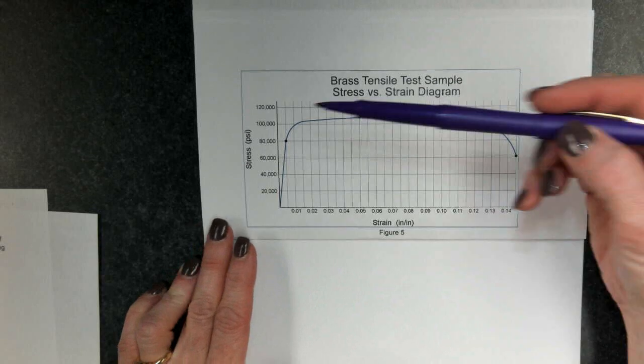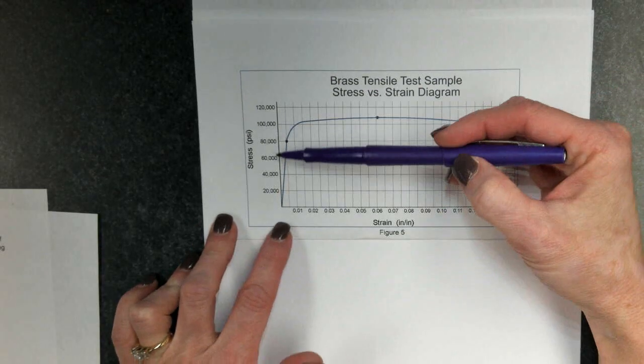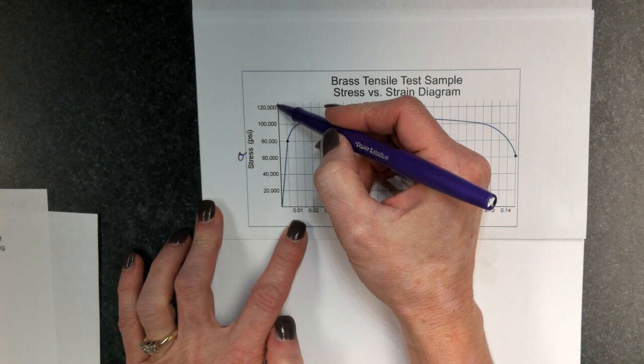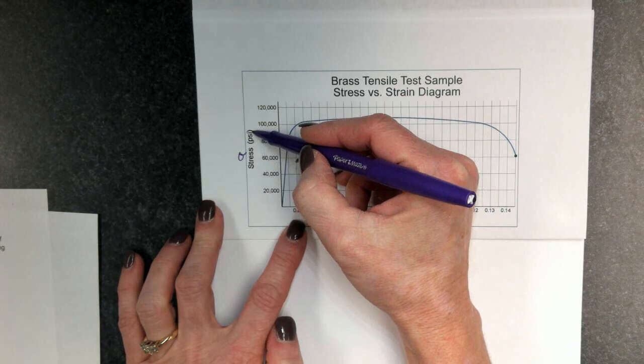Before you, I have a stress-strain diagram. Notice the stress, notified by sigma, is given on the y-axis in pounds per square inch.